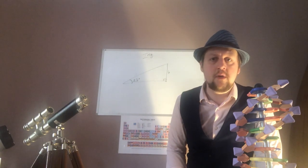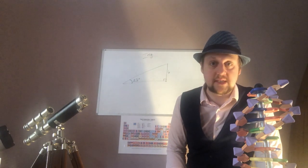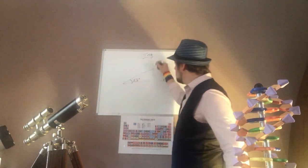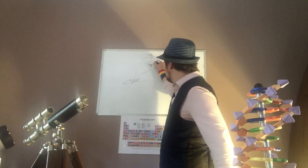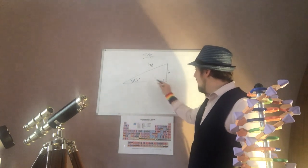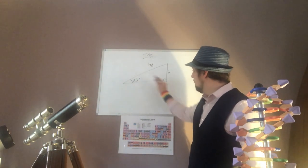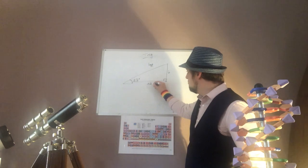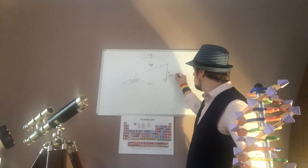Okay. So hypotenuse, adjacent, and opposite. The hypotenuse is always the longest side. The adjacent is always the side between the right angle and the angle on there. So that's your adjacent. And the opposite is the one you have left.